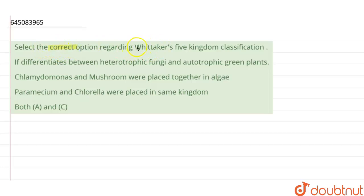Select the correct option regarding Whittaker's five kingdom classification. Since there are numerous species present on the earth, they need to be classified for our understanding and this classification is usually based on the similar characters.